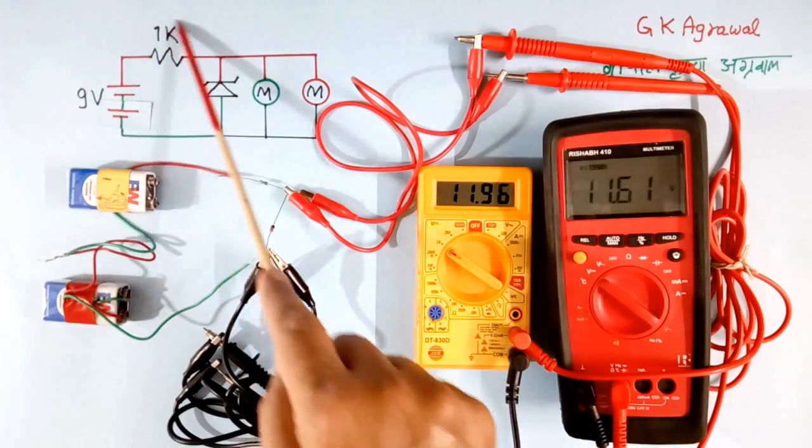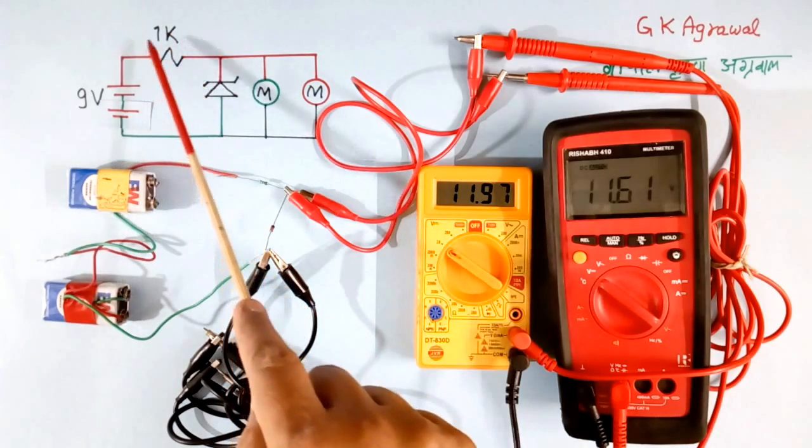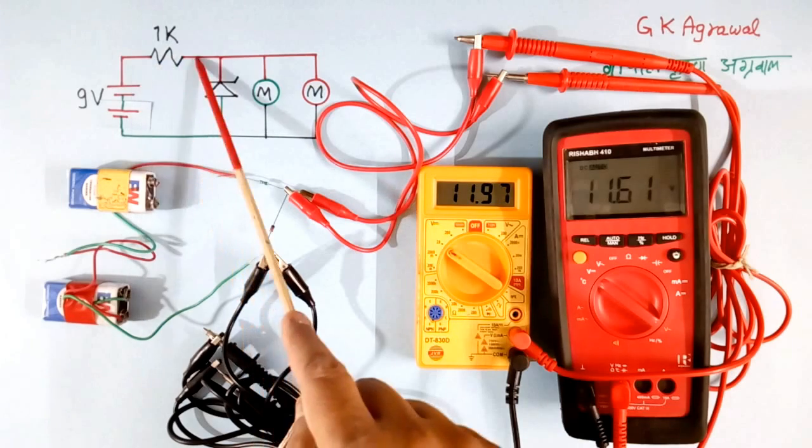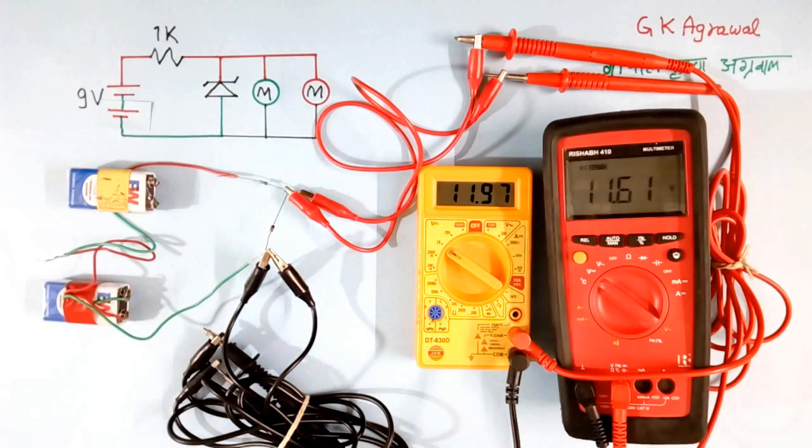Now the value of this resistance is not that important. It should be 1k. It can be 2k. Here and there, there is no problem. Today we will close now.